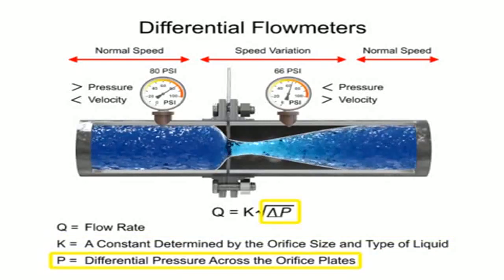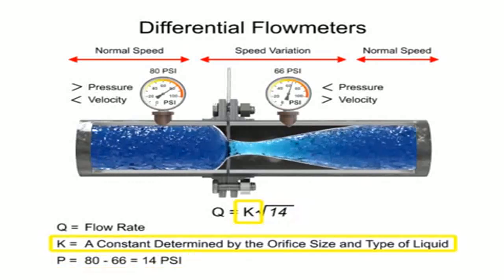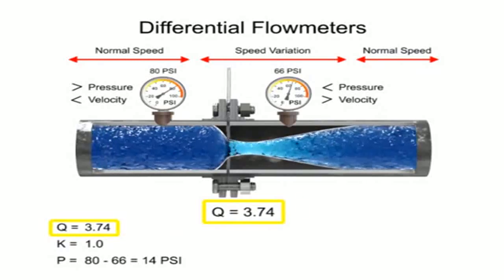For example, if the differential pressure increases by 14 psi with a K factor of 1, the flow rate is increased by 3.74.